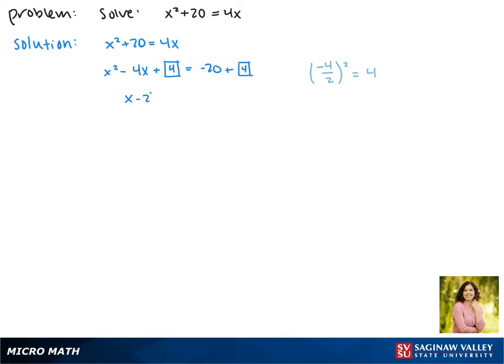Factoring the left side, we get x minus 2 all squared, and that equals negative 16. This means that x minus 2 equals plus or minus the square root of negative 16.